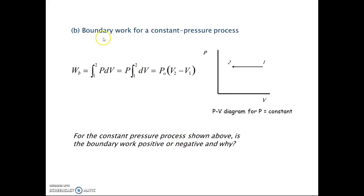Second process: boundary work for a constant pressure. Just now we had constant volume, this time we have constant pressure. We have changes of V but a constant P. This is the work of boundary from state 1 to 2.